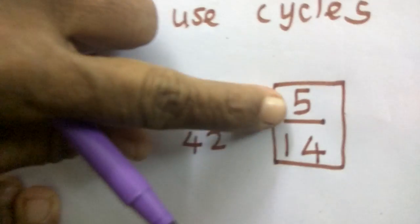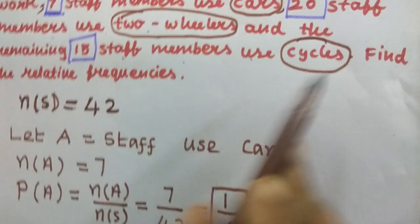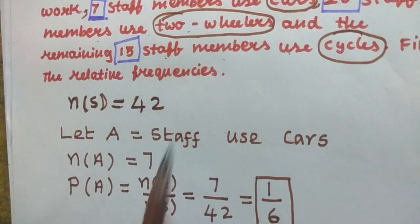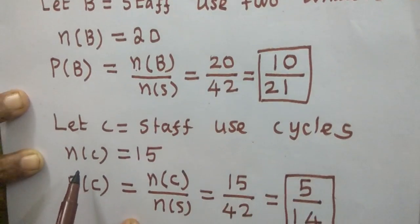So what are the answers? 1 by 6, 10 by 21, 5 by 14. There are 3 events we are getting in this problem. Find the relative frequencies. So all the 3 you have to do it. Do you follow? Thank you.